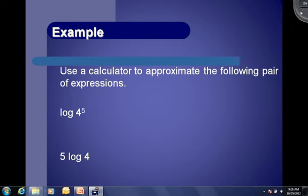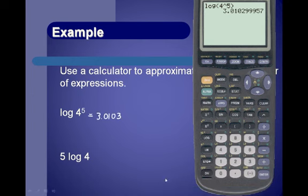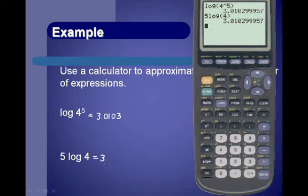Let's do it again. Use a calculator to approximate the following pair of expressions: log(4^5) and 5·log(4). For the first one, log(4^5) gives 3.0103. For the second, 5 × log(4) also gives exactly 3.0103 — the same result.